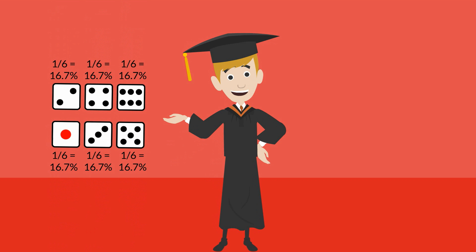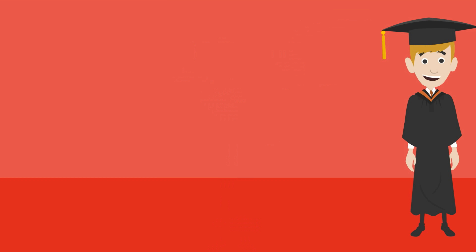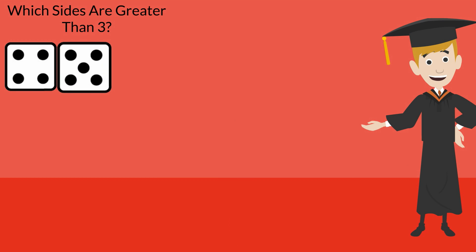The likelihood of one outcome taking place is one divided by six, or about 16.7%. But what about the likelihood of, let's say, obtaining a number greater than three? In that case, there are three possibilities: four, five, and six.